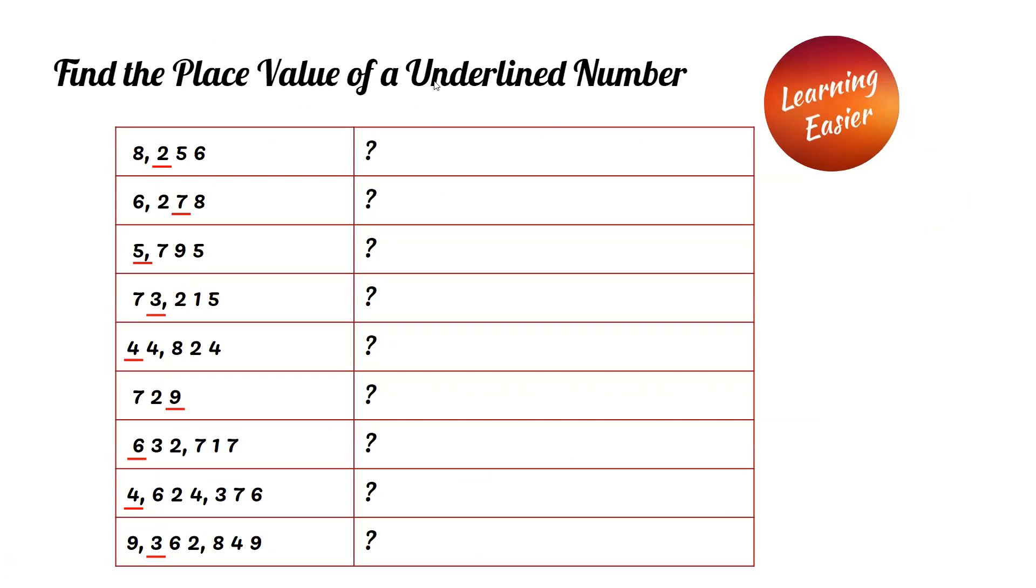Find the place value of the underlined number. 8,256. Since the two is in the hundreds place, the place value is 200.